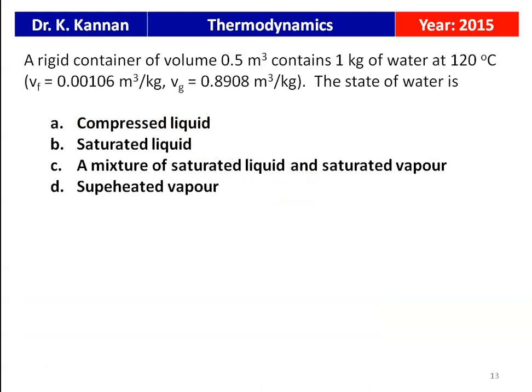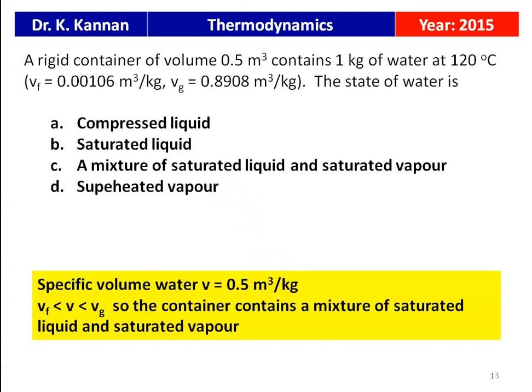Next question from the 2015 question paper: a rigid container of volume 0.5 m³ contains 1 kg of water at 120°C, where Vf = 0.00106 m³/kg and Vg = 0.8908 m³/kg. The specific volume = 0.5 m³/kg, which is less than Vg and greater than Vf. Therefore, the container contains a mixture of saturated liquid and saturated vapour. The correct answer is: a mixture of saturated liquid and saturated vapour.